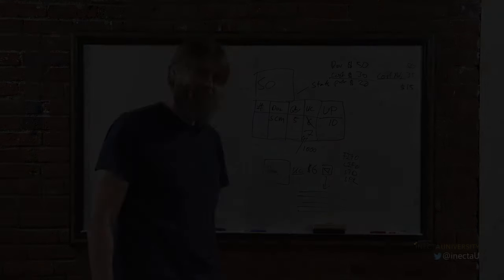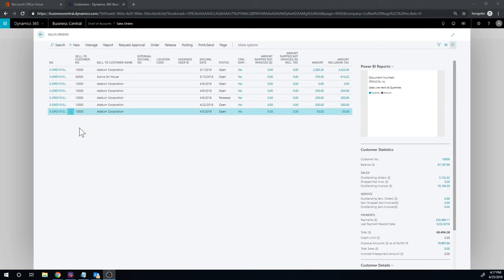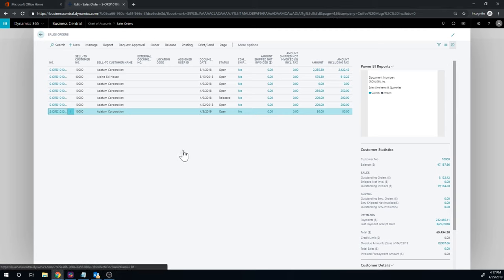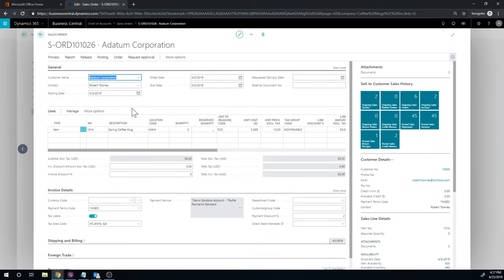Let's take a look at the system again. So I'm here in sales orders. I open up a sales order and I've created a sales order for the spring coffee mug. I made visible the unit cost field for the line, and it automatically populated with five dollars and 27 cents approximately.